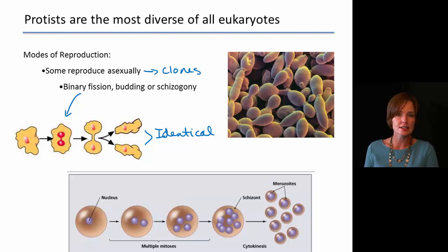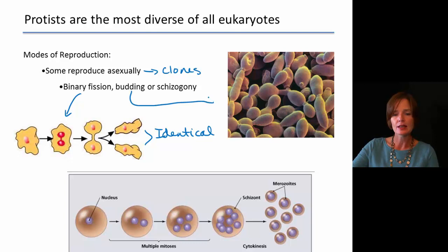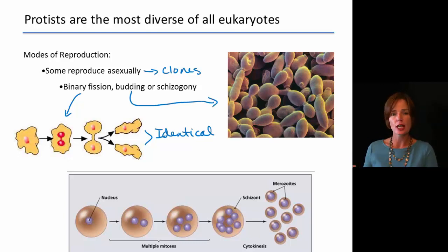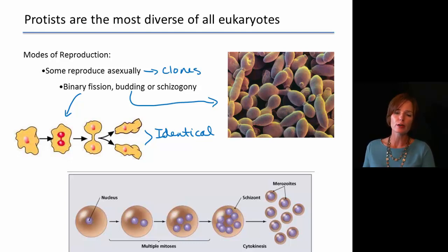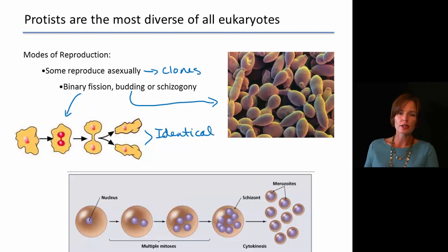Another way that we can have asexual reproduction is by budding. In this case the genetic information is going to be copied, and then the cell is going to kind of pinch off another piece, producing a couple of daughter cells from that original parent cell. Usually one of the cells stays large and you have a smaller one that buds off.